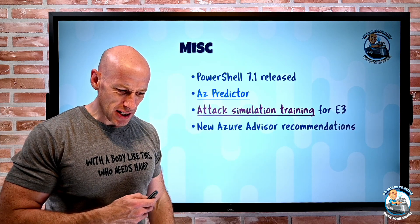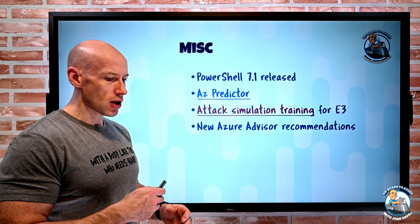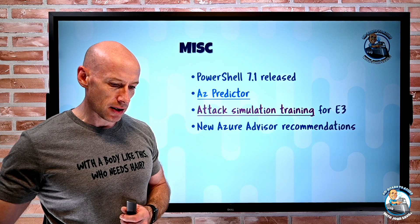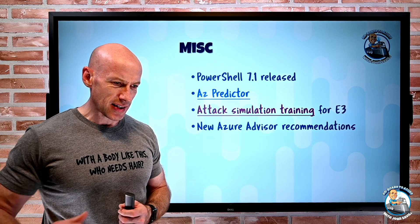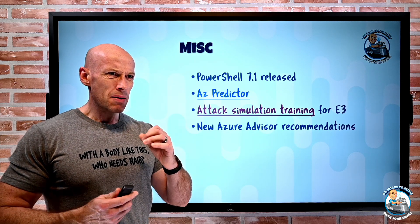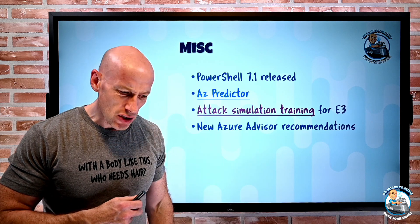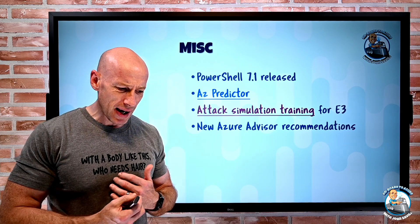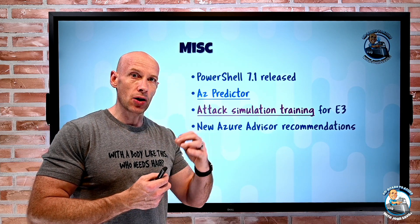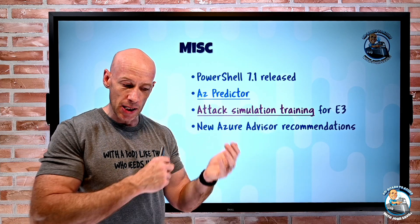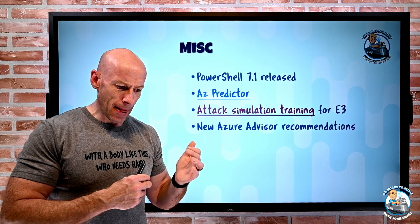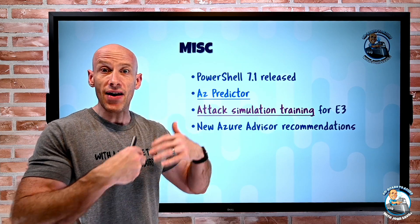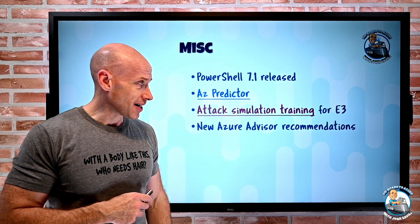There are also a bunch of new Azure Advisor recommendations — you can check them all out via the link below. They cover things like: make sure you upgrade the Azure Arc Agent if it's out of date; don't override the host name without a gateway; deploy VMs close to the WVD deployment for best performance; and upgrade to the latest Immersive Reader SDK. Just a few advisors they've added to Azure Advisor.